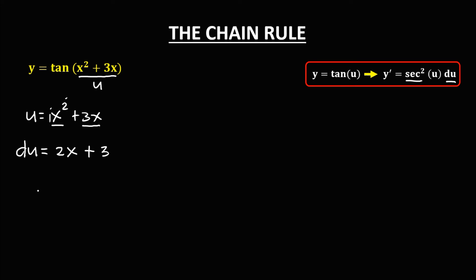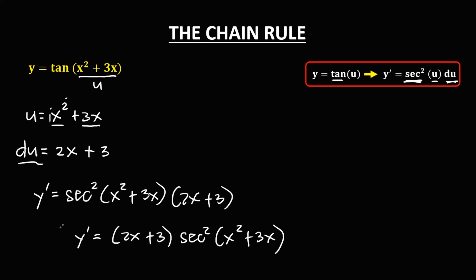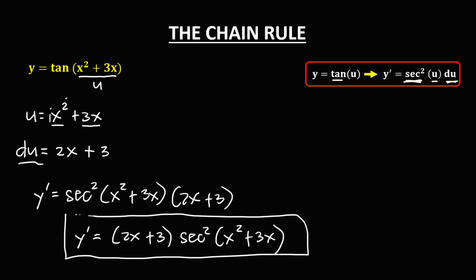To find the derivative: y prime equals secant squared of u, where u is (x squared plus 3x), times the derivative of u which is (2x plus 3). Therefore y prime equals (2x plus 3) times secant squared(x squared plus 3x). This is the derivative.